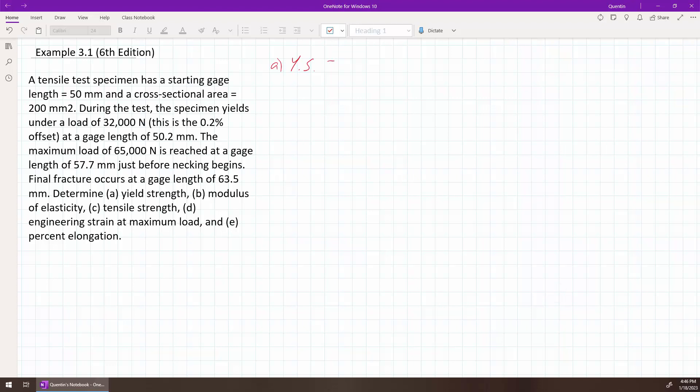Well, it's the force that causes it to yield over the area. So in this case, it's the 32,000 newtons over 200 millimeters squared. And so that is exactly 160 newtons per millimeter squared.